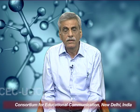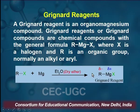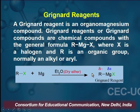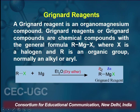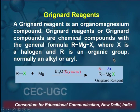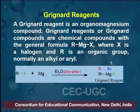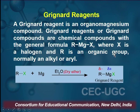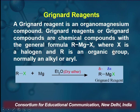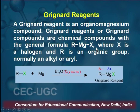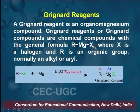Grignard Reagent is an organometallic compound and this reagent is normally referred to as RX plus Mg giving RMgX, where X is a halogen — may be chlorine, bromine, or iodine — and R is an organic group, normally an alkyl or aryl group.